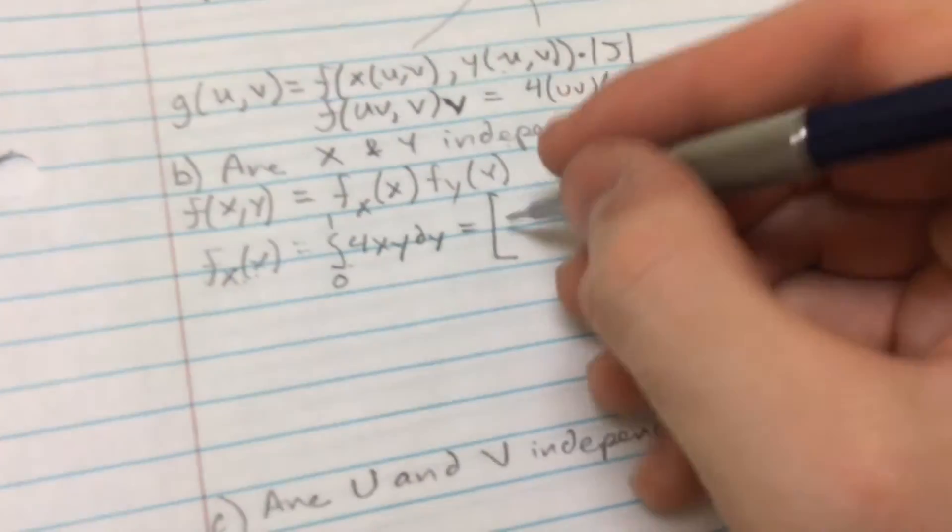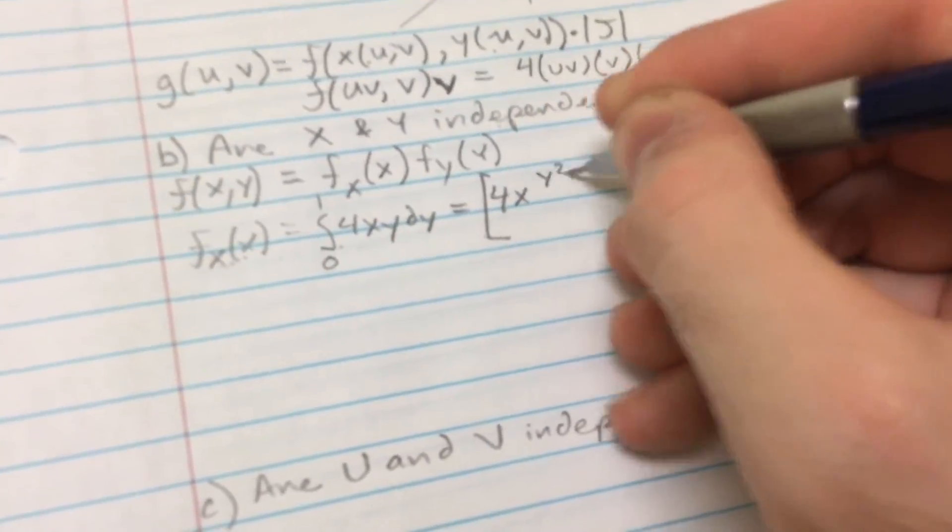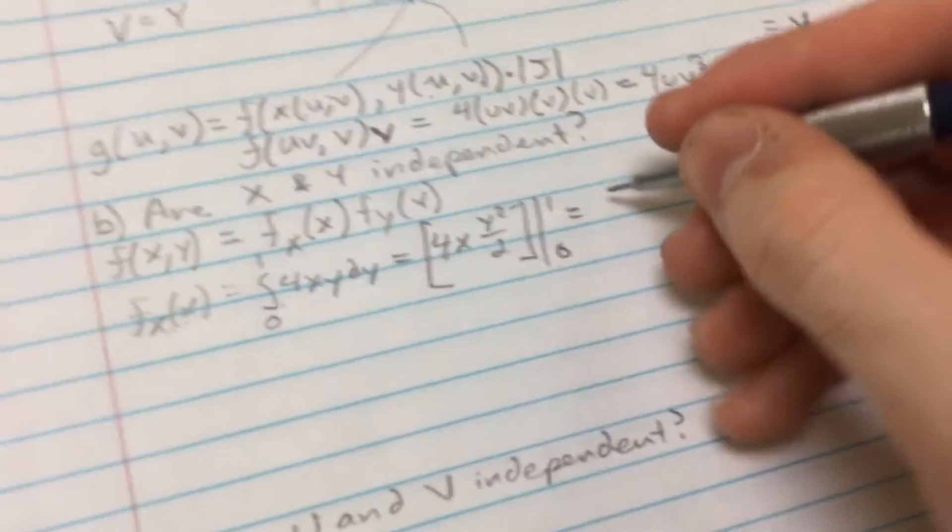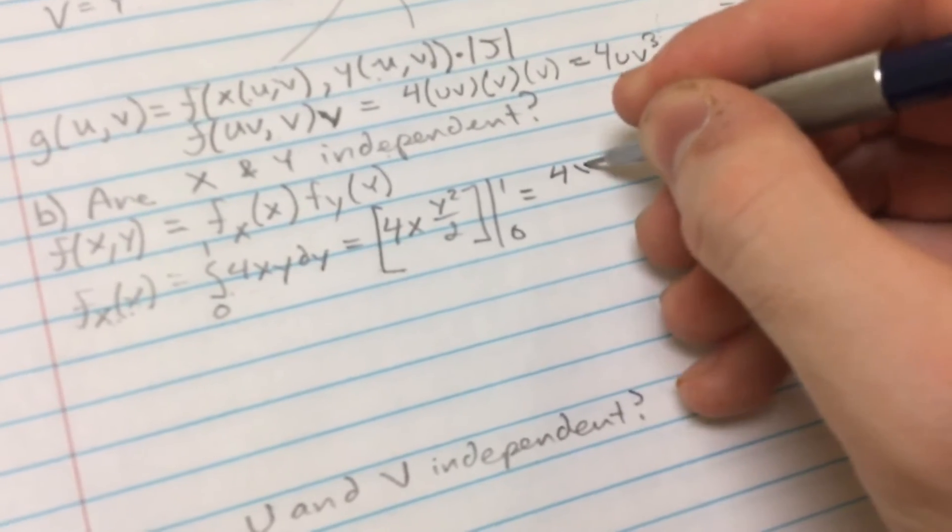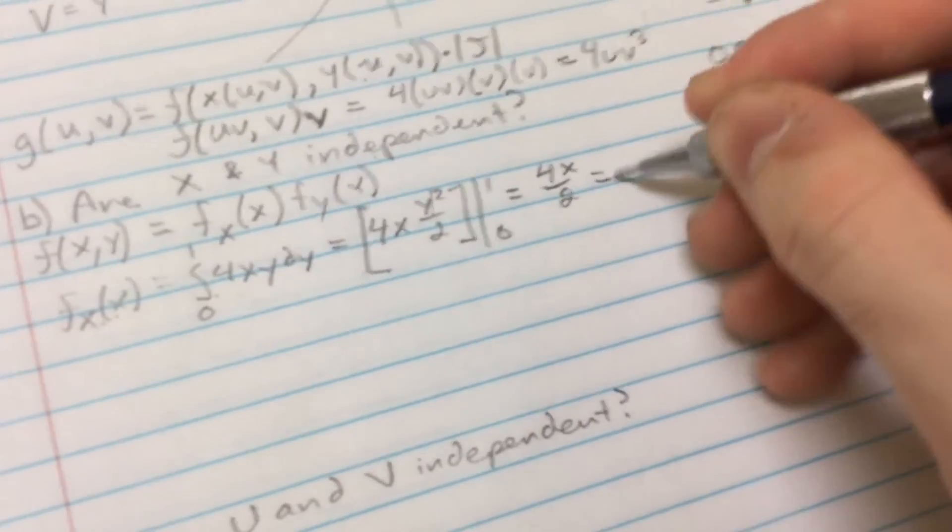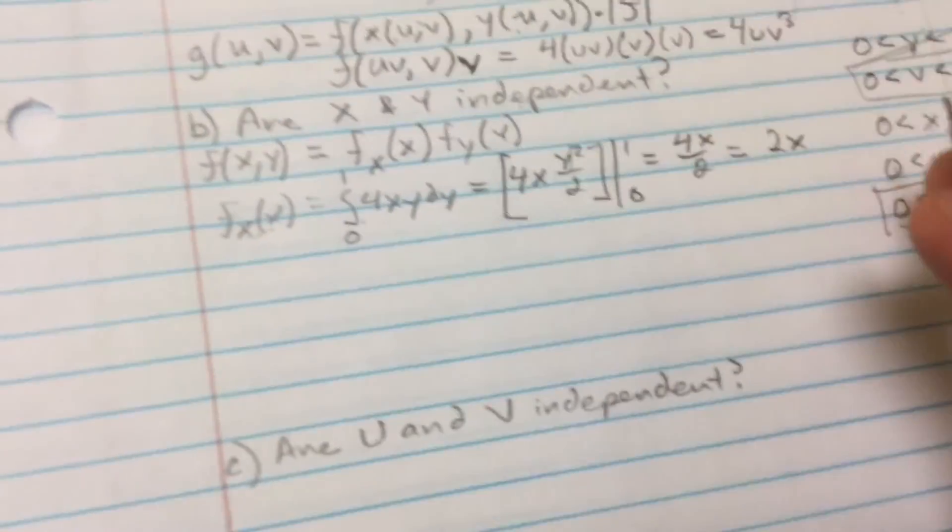Now what we want to do is we want to plug in the function with respect to Y, dY. Well, what does this equal to? 4XY squared over 2. That's just going to be like that. Kind of a shortcut. I mean, not really a shortcut, but not as verbose as I could make it.